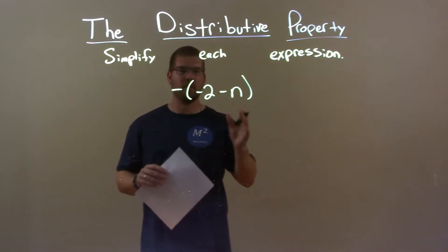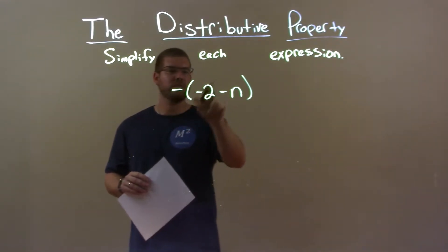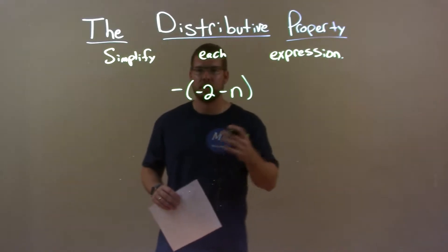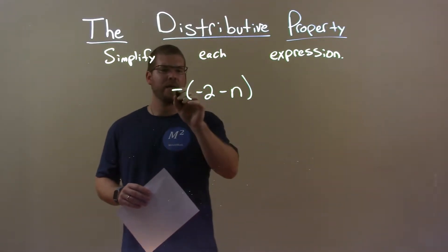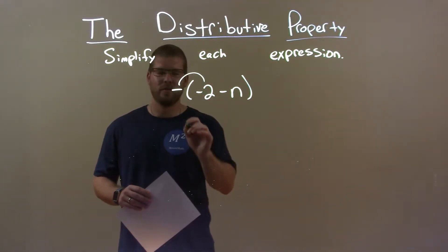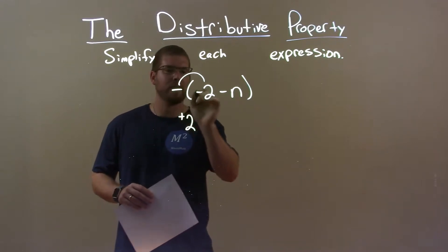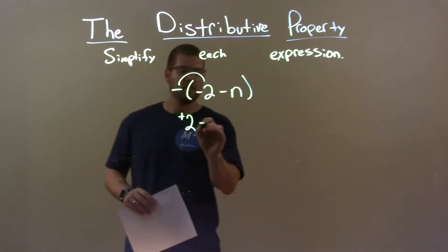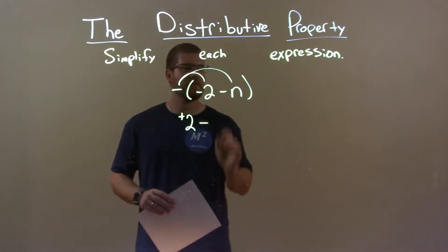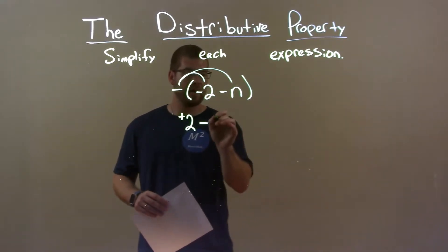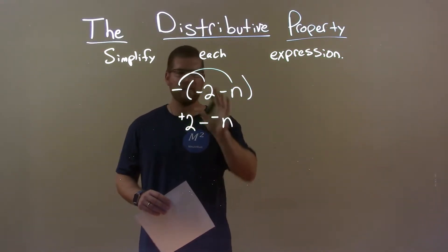Nothing I can do to simplify, so now we distribute this negative within the parenthesis. We have negative times a negative 2, which is a positive 2, right? Negative times a negative is a positive. Then we have negative times a positive n, which is a negative, so we have a negative n here.